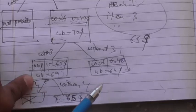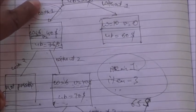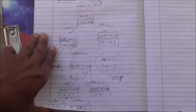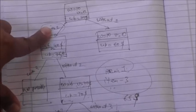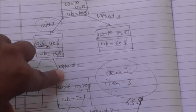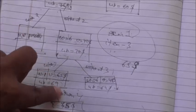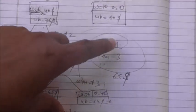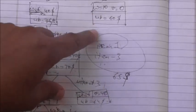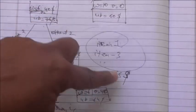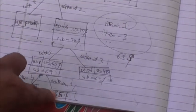Tracing back from the root: we included item one, did not include item two, included item three, and did not include item four. So the solution includes item number one and item number three, and the maximum value inside the knapsack is 65 dollars.